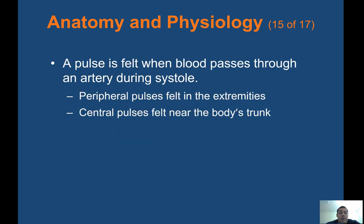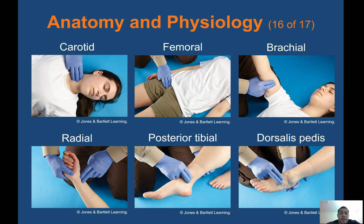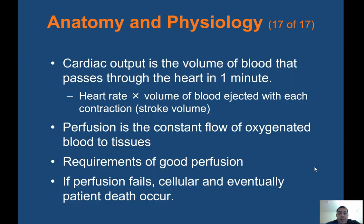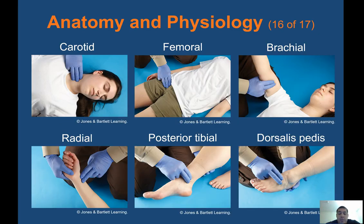A pulse is felt when blood passes through an artery during systole. Peripheral pulses are felt in the extremities; central pulses are felt near the body's trunk. Central pulses include carotid and femoral. If you don't have a carotid on an unresponsive patient, start CPR. Peripheral pulses include radial and pedal. The brachial pulse in the upper arm is where you check for a pediatric patient. Posterior tibial is near the ankle, dorsalis pedis is on top of the foot, and the popliteal artery is behind the knee.